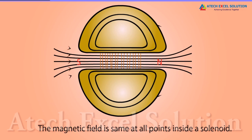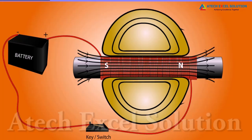A strong magnetic field produced inside a solenoid can be used to magnetize a piece of magnetic material, like soft iron, when placed inside the coil.